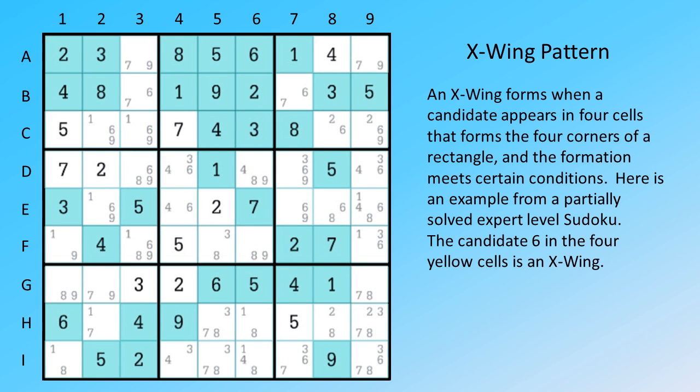An X-Wing forms when a candidate appears in four cells that forms the four corners of a rectangle and the formation meets certain conditions. Here is an example from a partially solved expert level Sudoku. The candidate six in the four yellow cells is an X-Wing.